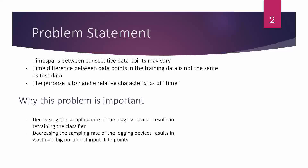What is the problem? The state-of-the-art algorithms for predicting the label in time series have hard-coded architectures, meaning the time spans between consecutive data points are not meant to vary. So what if, after training the classifier, the sampling rate of one of the sampling devices changes, and the test data has different time spans between data points from the training data?